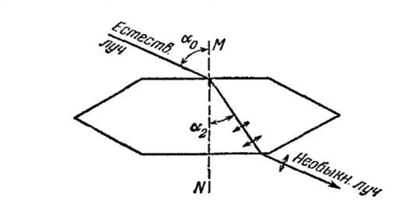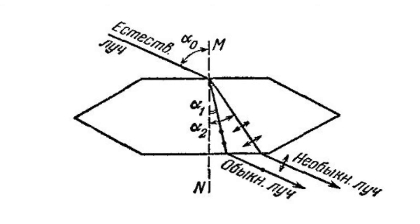Due to such uncommon refraction, this ray is considered the extraordinary ray. The two rays also differ in that the ordinary ray has a stable refraction indicator regardless of the direction of the ray, while the refraction indicator of the extraordinary ray depends on the direction of the light propagation.